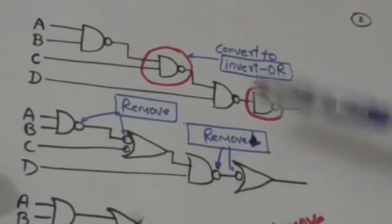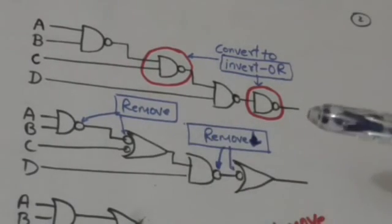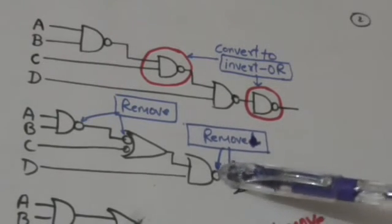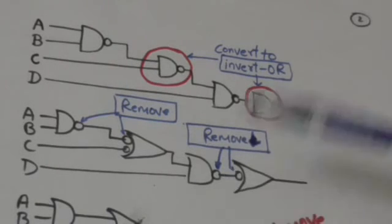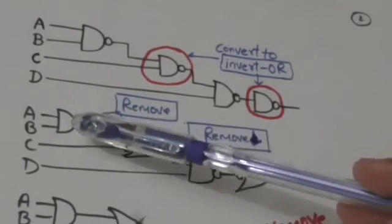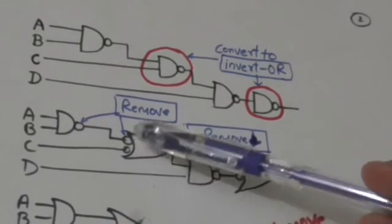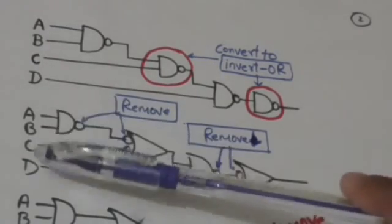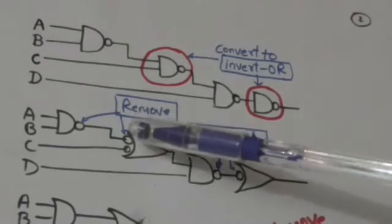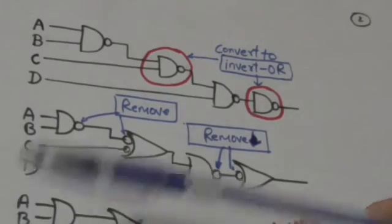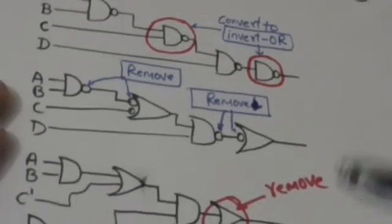These are invert-OR symbols. Now, pairs of circles along the same line will be removed — these two circles and these two circles will be removed. This circle goes to external input C, so it will also be removed and input variable C will be complemented. It would become like this.